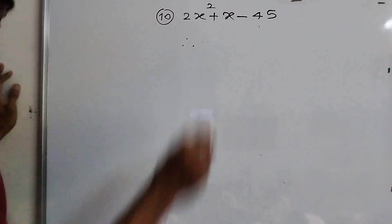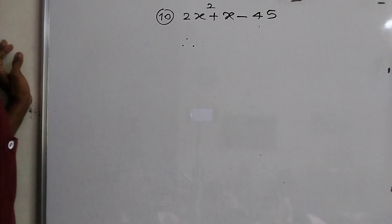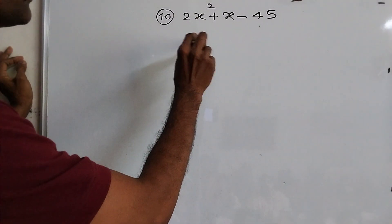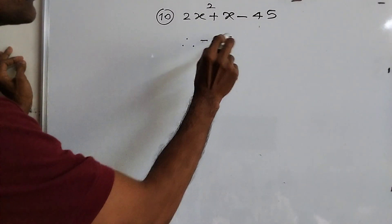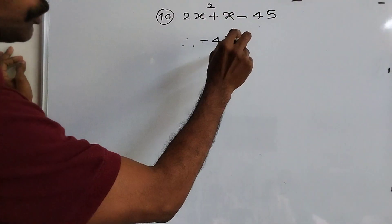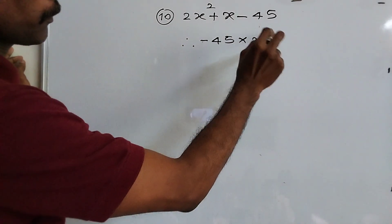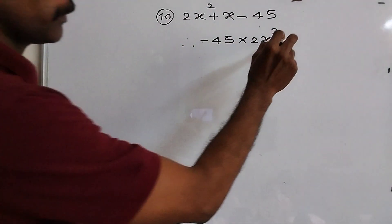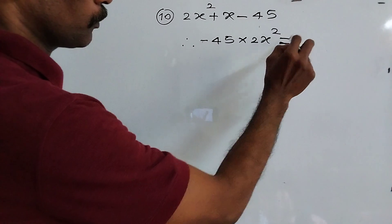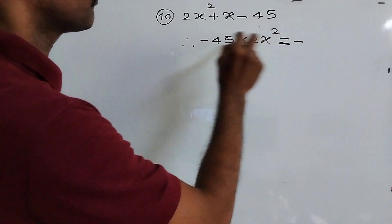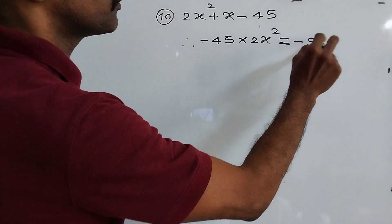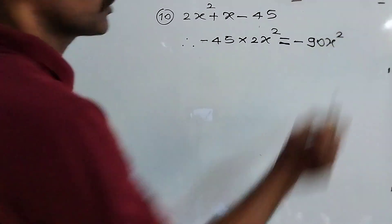Now first step. Minus 45 into 2x square. This is equal to minus 45 into 2, 90 into x square.